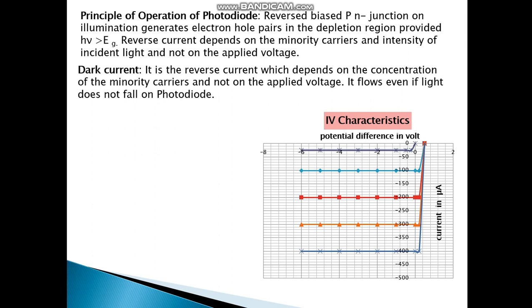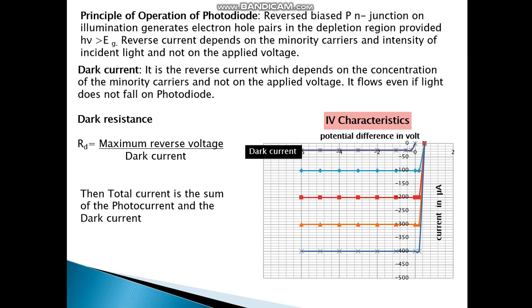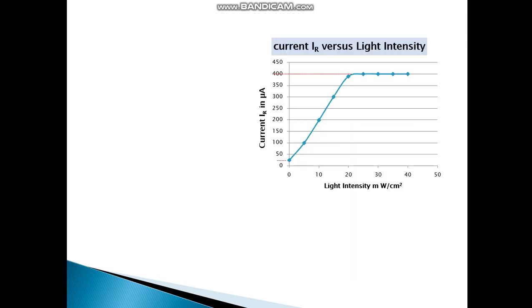Dark current: it is the reverse current which depends on the concentration of the minority carriers and not on the applied voltage. It flows even if light does not fall on the photodiode. So that's the dark current. Dark resistance is the ratio of maximum reverse voltage upon the dark current. The total current is the sum of photocurrent and the dark current. So that's the characteristic, current versus the intensity of the light. IR is the reverse current, saturation current IS, ID is the dark current.